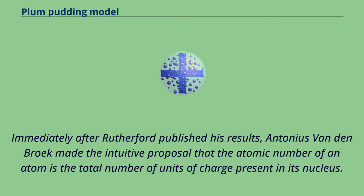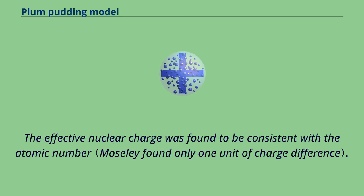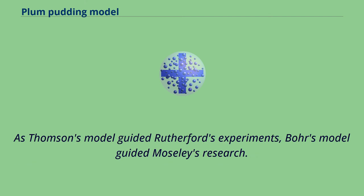Immediately after Rutherford published his results, Antonius van den Broek made the intuitive proposal that the atomic number of an atom is the total number of units of charge present in its nucleus. Henry Moseley's 1913 experiments provided the necessary evidence to support van den Broek's proposal, and the effective nuclear charge was found to be consistent with the atomic number. This work culminated in the solar system-like Bohr model of the atom, in which a nucleus containing an atomic number of positive charges is surrounded by an equal number of electrons in orbital shells. As Thomson's model guided Rutherford's experiments, Bohr's model guided Moseley's research.